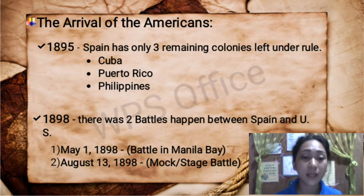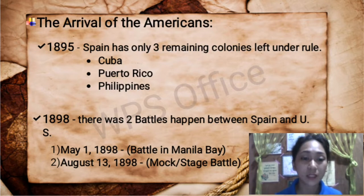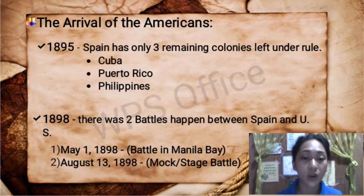In 1898, two battles happened between Spain and the United States. The first battle happened on May 1, 1898, known as the Battle of Manila Bay. The second one was on August 13, 1898, also known as the mock or staged battle.